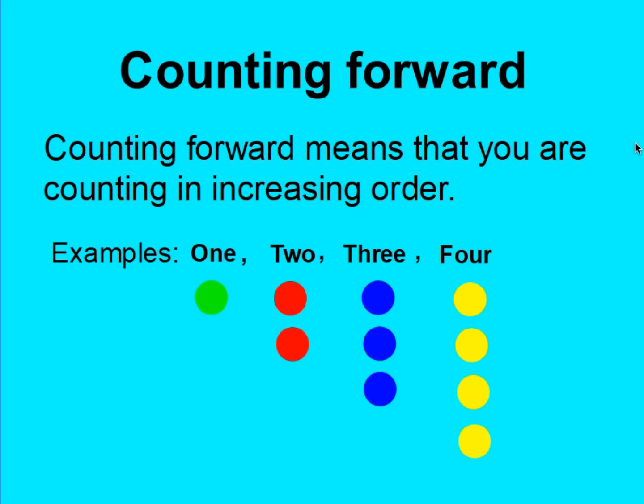Twenty-one, twenty-two, twenty-three, twenty-four, twenty-five, twenty-six, twenty-seven, twenty-eight, twenty-nine, and thirty. Very good! Which means you were counting forward.